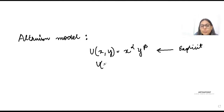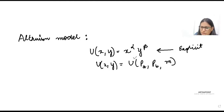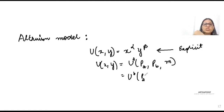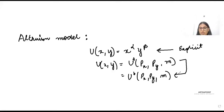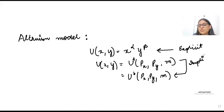But when I write my utility function such that it is a function of prices for individual A and prices for individual B — prices of good x, good y, and income m — when I do not define the function explicitly and just say it is some form, then I am talking about an implicit utility function.